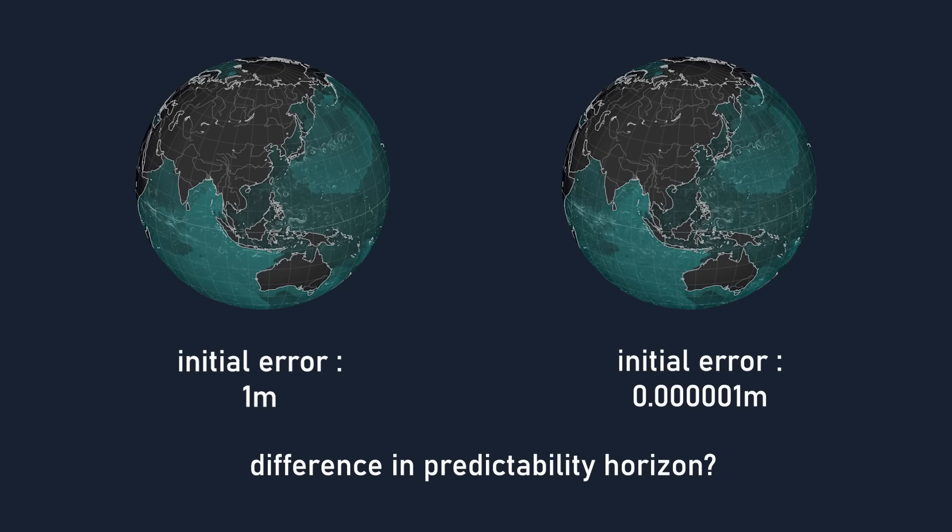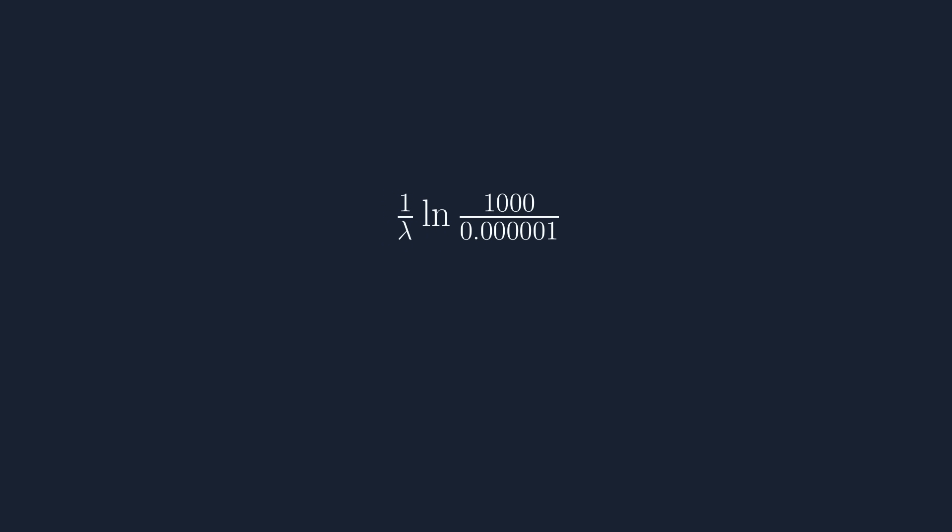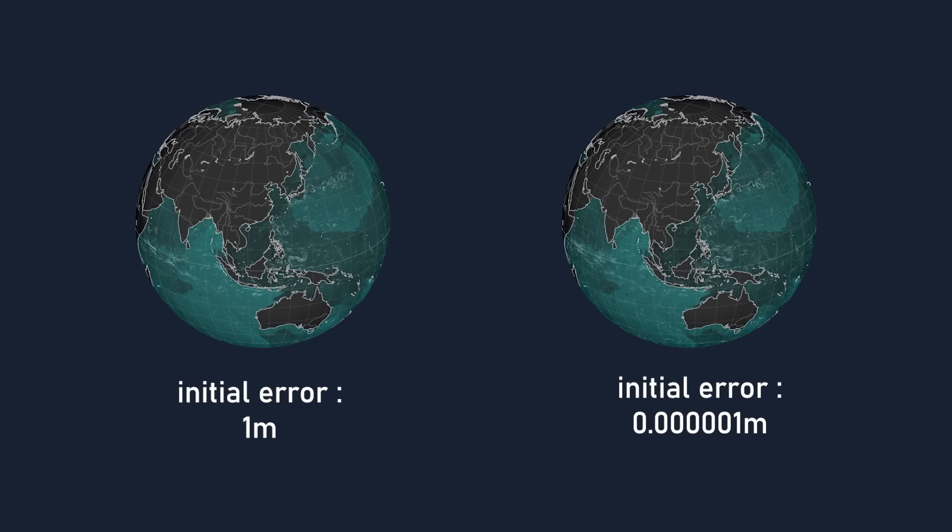Well, let's write the expressions for the two predictability horizons and put them in a fraction, simplify a little bit, use some logarithm rules, and it's 3 times longer. A million times more accurate, and your simulation would be valid for, let's say, 9 days instead of 3 days. This is the type of difficulty that any chaotic system presents in its simulation.